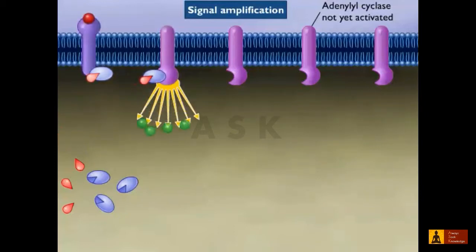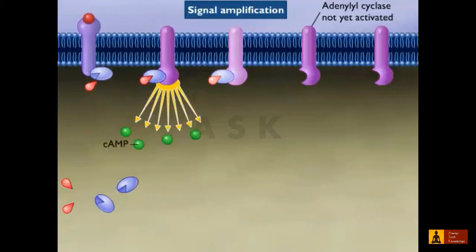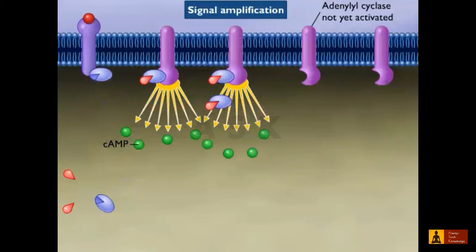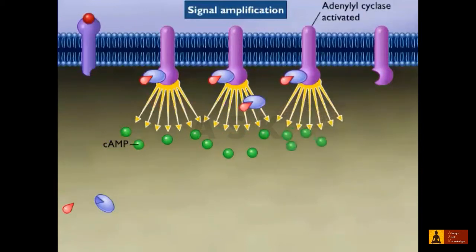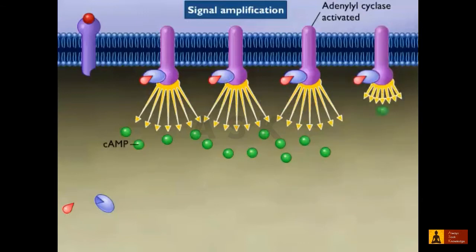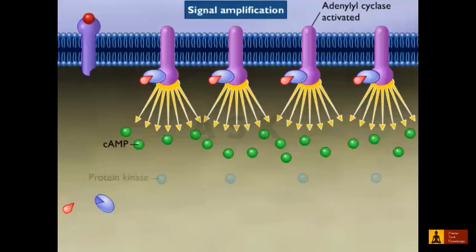In the case of a protein kinase cascade, one cell surface receptor activates many G-protein molecules. Each G-protein activates many adenylyl cyclases, and each cyclic AMP in turn will activate protein kinases.